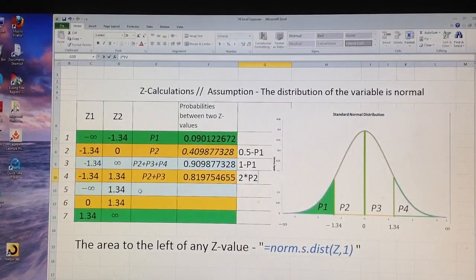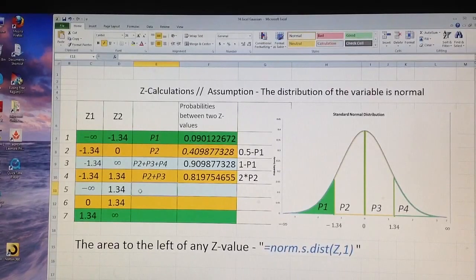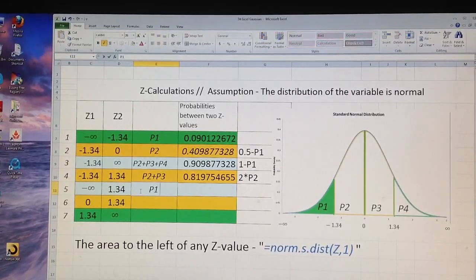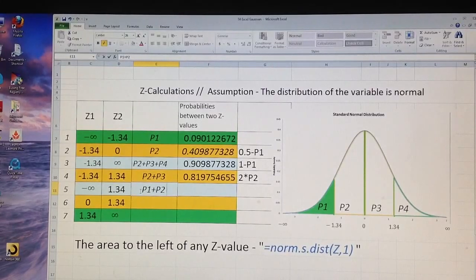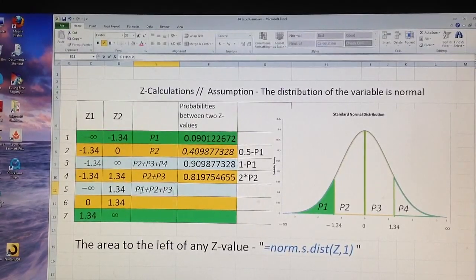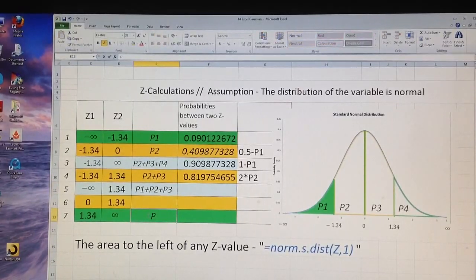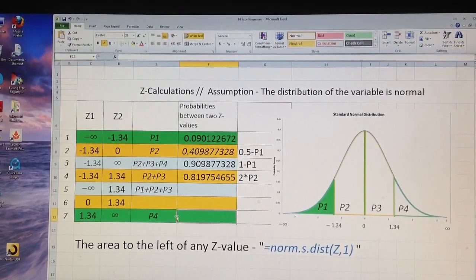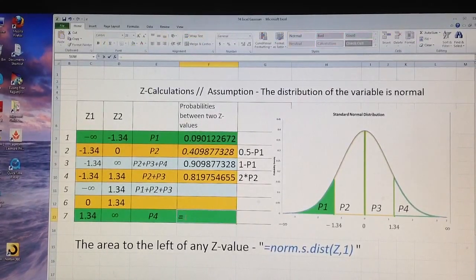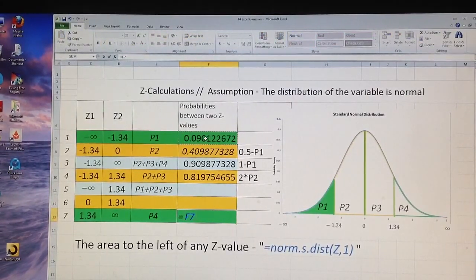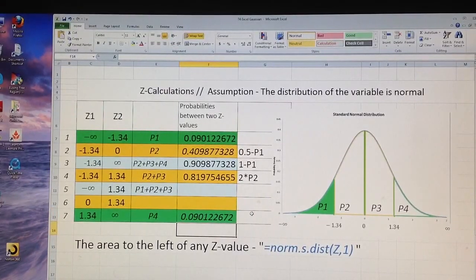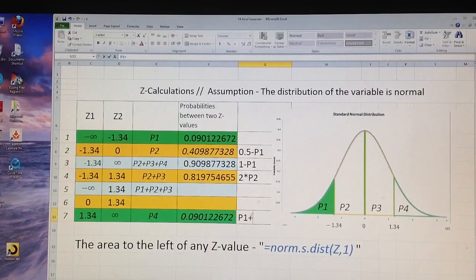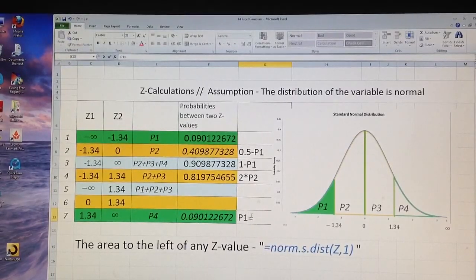And then comes this area from negative infinity to 1.34, which is actually P1 plus P2 plus P3. I will need to calculate this area from 1.34 to infinity is my area P4. And this area P4 actually, which is missing in this interval number 5, is equal to P1, because they are symmetrical. So P4 and P1 are equal.